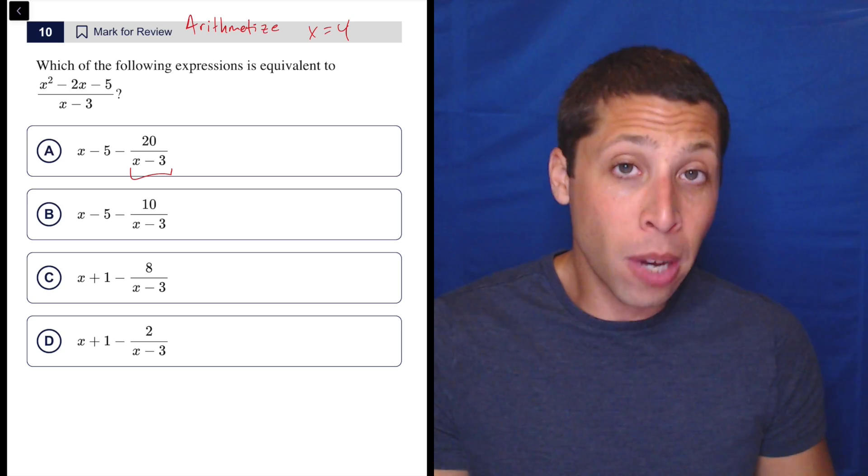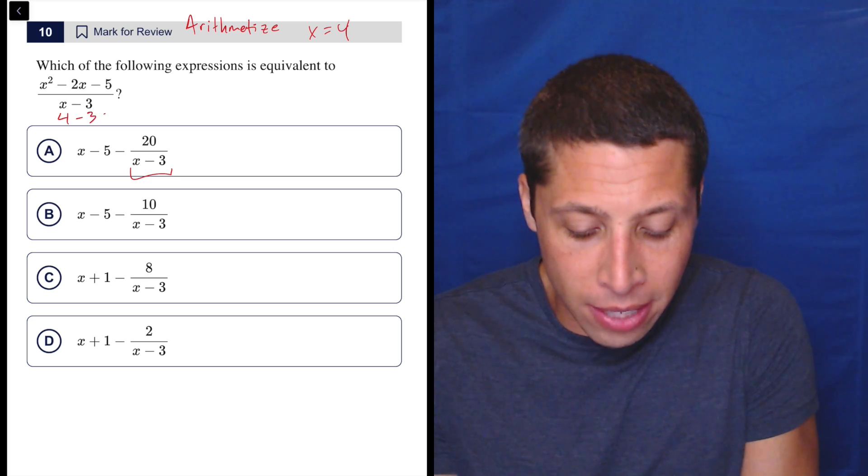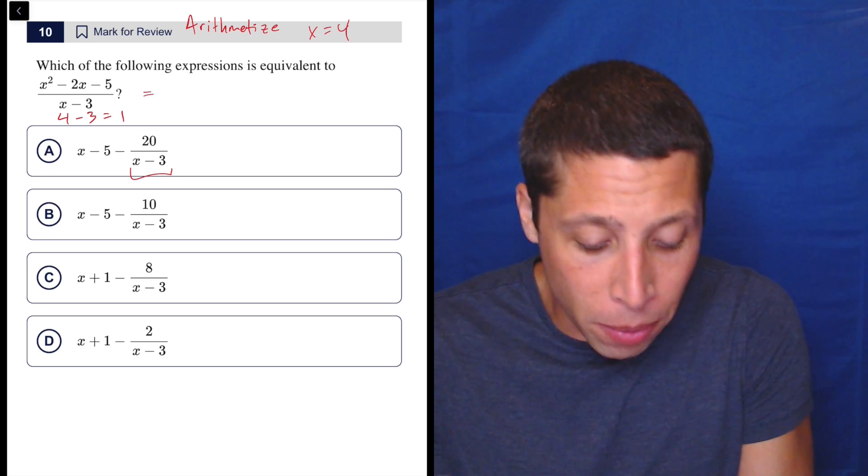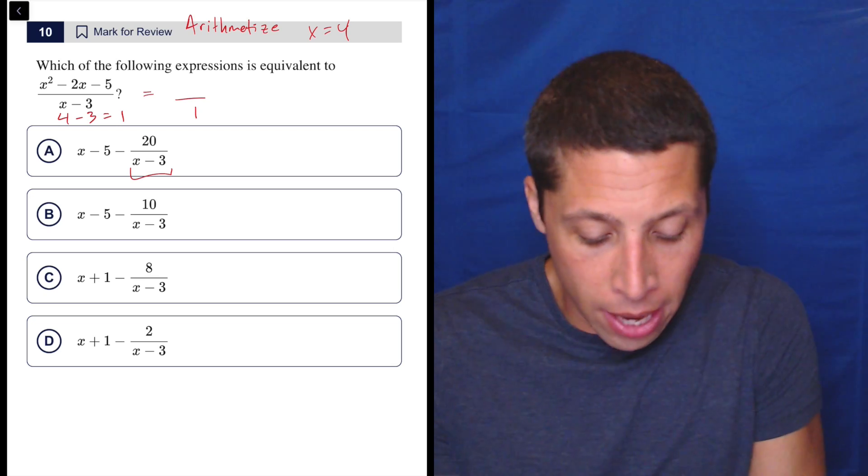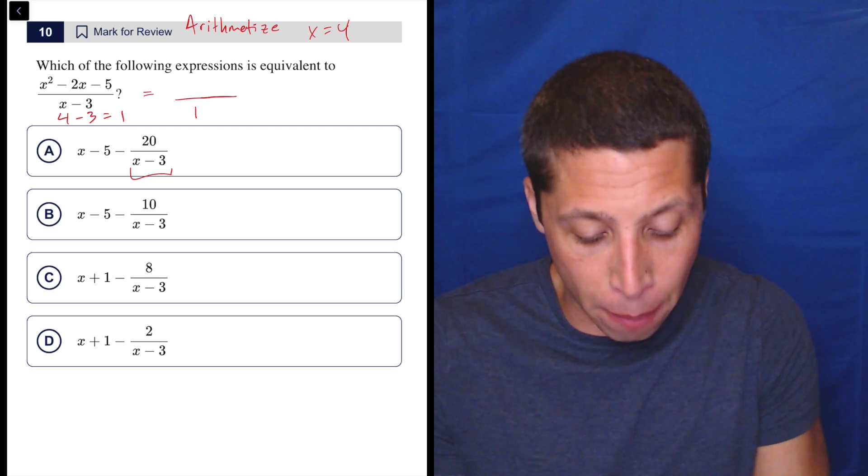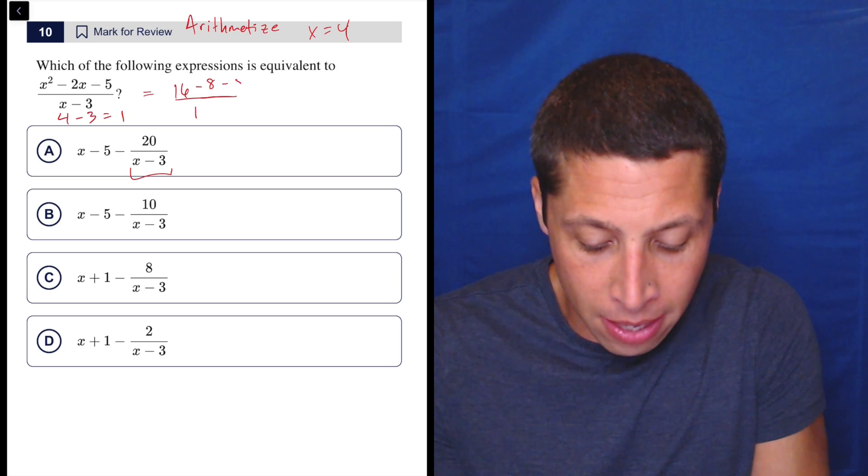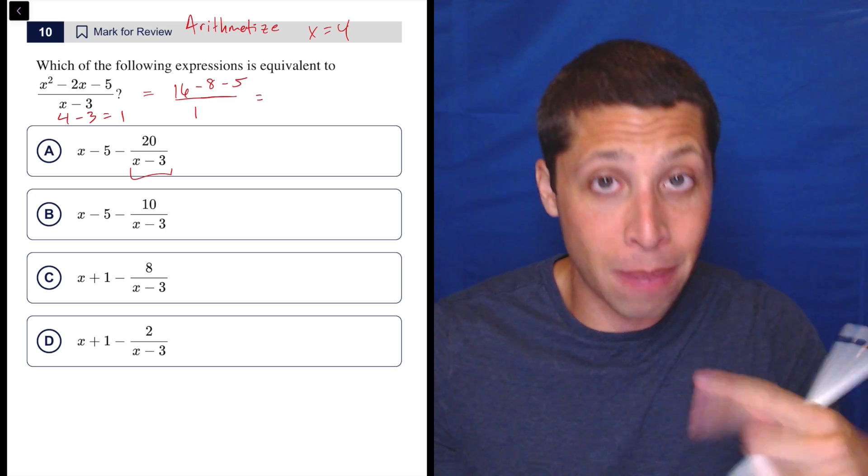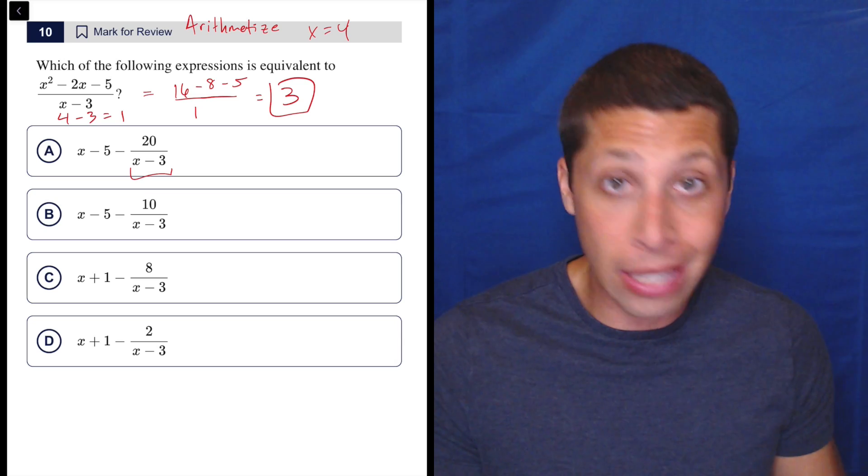But I'm going to try to put four in here so that the denominator of this is one, meaning that this won't be a fraction. This will just be a regular integer, right? Because it's something over one, and that'll just go away. So let's see what happens. We put in four for the top, so it's going to be 16 minus eight minus five. So 16 minus eight is eight. Eight minus five is three. So there's my magic number.